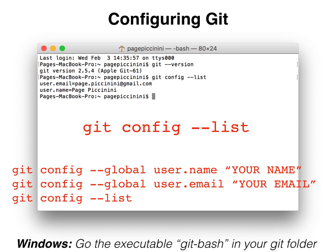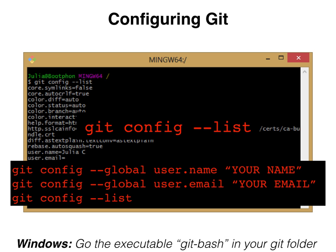Now you should see that your username and email display when you type in git config list. This is how it should look with the git bash on a Windows machine. The user email is shown — it should display your email appropriately now.